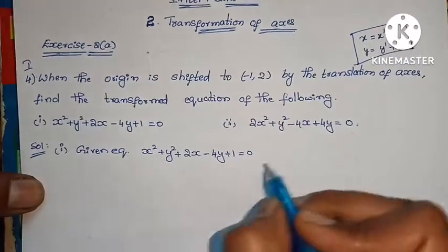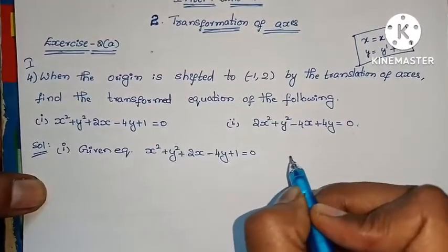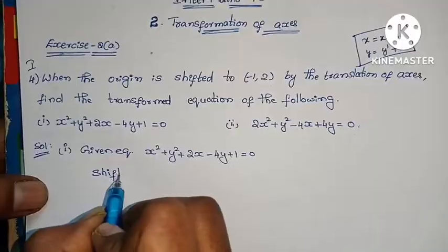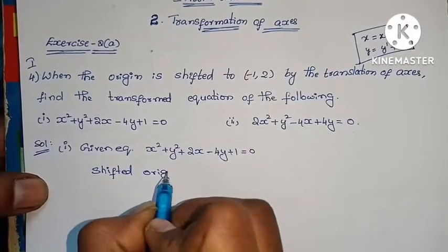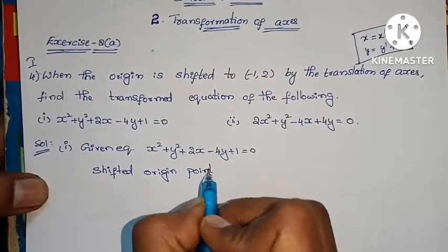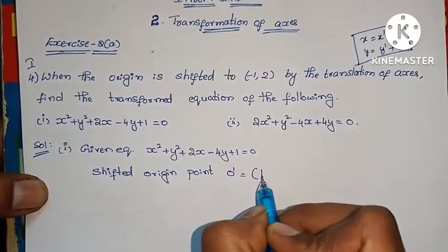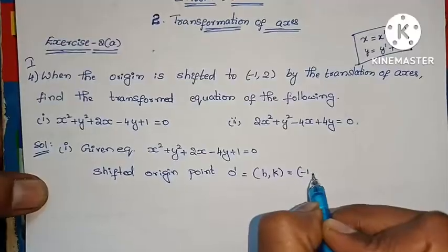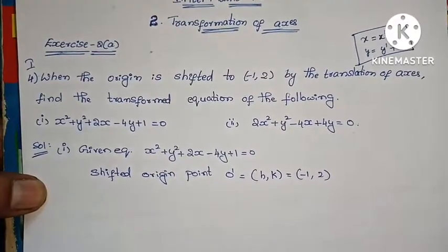The shifted origin point is asked. Shifted origin point o dash equals to h comma k, that equals to minus 1 comma 2. So h value is minus 1, k value is 2.